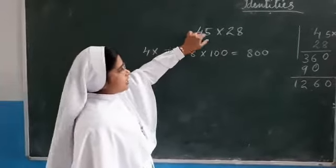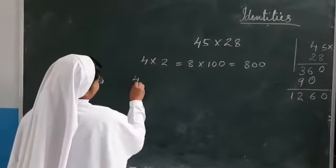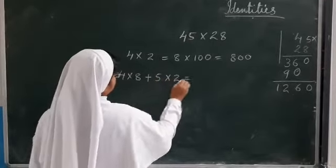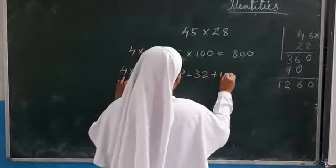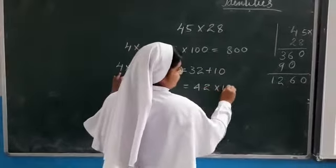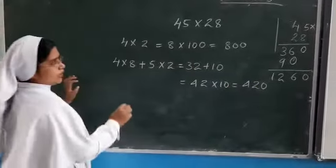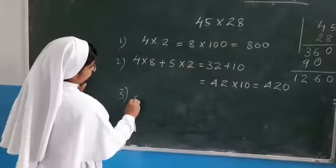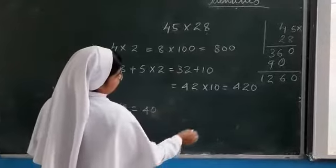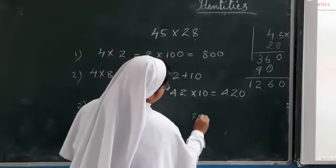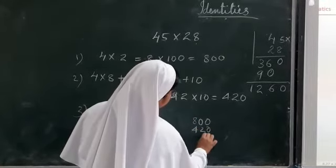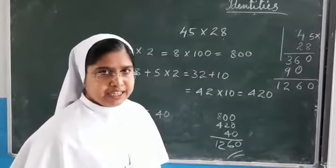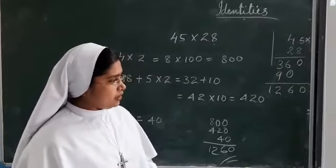Now I said, one is at tens place, another one is at ones place. So 4 into 8 plus 5 into 2, that is 42 into 10. So you get 420. Now at ones place, this is the first two steps, second step, third step is, ones 5 and 8. 5 into 8 is equal to 40. So now adding together, what will you get? That is the 800, 420, 40. So you get the same answer. Hope it is clear to you. Now the third, we will see the second part of the question in the next class.